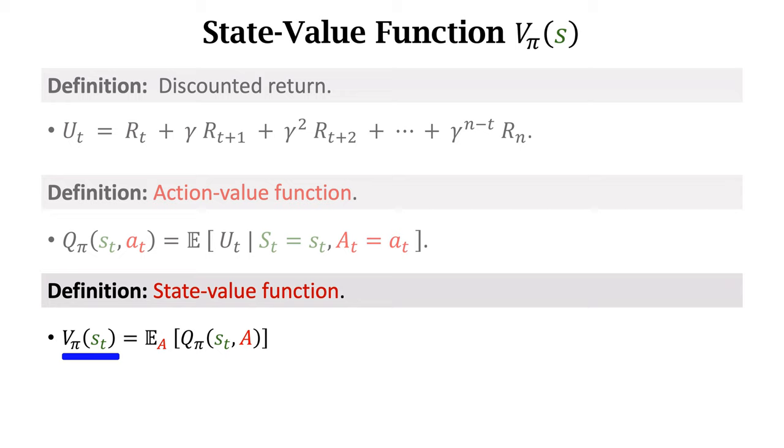What is the physical meaning of V_π? Given the policy π, V_π indicates how good the current state is. For example, when playing Super Mario, V_π can tell whether I'm close to winning or losing the game. Here, the expectation is taken with respect to action a. The probability density function of a is the policy function π.